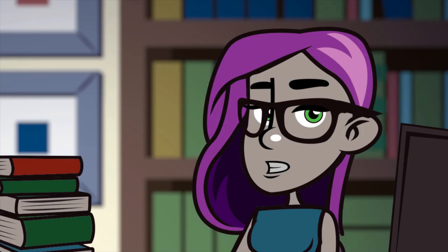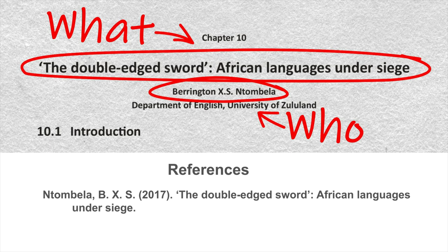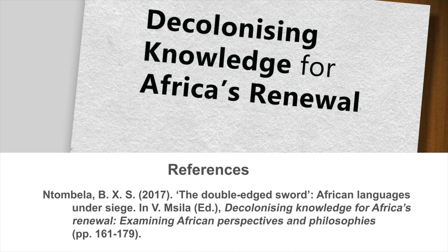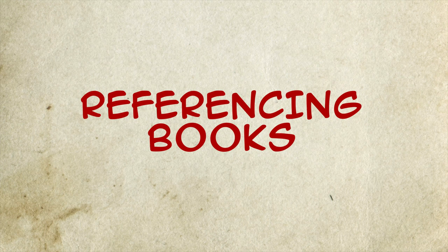When it comes to referencing — sounds like me, right? Dictionaries with editors or compilers, where each entry is written by a different author, are treated the same as Collected Works. Refer to my Collected Works video for more information. Dictionaries with authors are referenced similarly to books. Watch my video on referencing books to find an example.